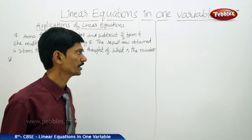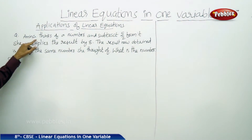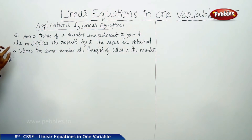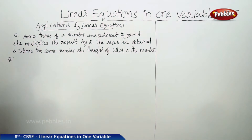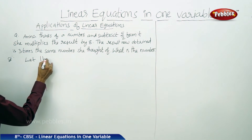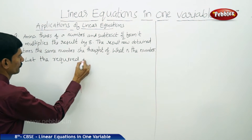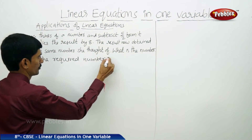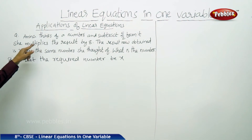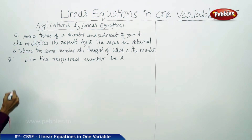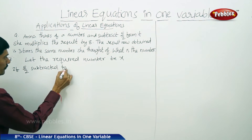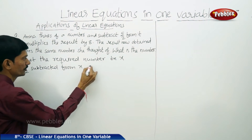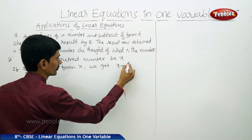Now let us solve a few applications of linear equations. Amina thinks of a number and subtracts 5 by 2 from it. She multiplies the result by 8. The result now obtained is 3 times the same number she thought of. What is the number? Let the required number be x. If 5 by 2 is subtracted from x, we get x minus 5 by 2.